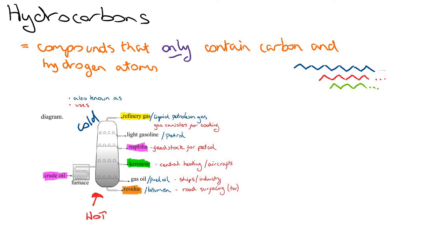And the material with highest boiling point down here is the residue. Now the residue is also known as bitumen. It's used for road surfacing and tar. So let's have a quick look at how they're separated.